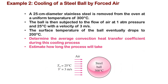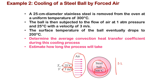Now let's solve an example to illustrate this concept. We have a hot steel ball at 300°C, and we would like to cool it with air at 25°C with a velocity of 3 m/s. The diameter of the sphere is 0.25 m. We are asked to find: Part A — the convective heat transfer coefficient h_bar; Part B — how long it takes to cool this sphere to 200°C.